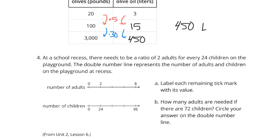We go from 0 to 2, so the top number line for adults is counting by 2s. So 0, 2, 4, 6, and then 8. The bottom number line is counting by 24 as we go from 0 to 24. So 0, 24, 48, 72, then 96.